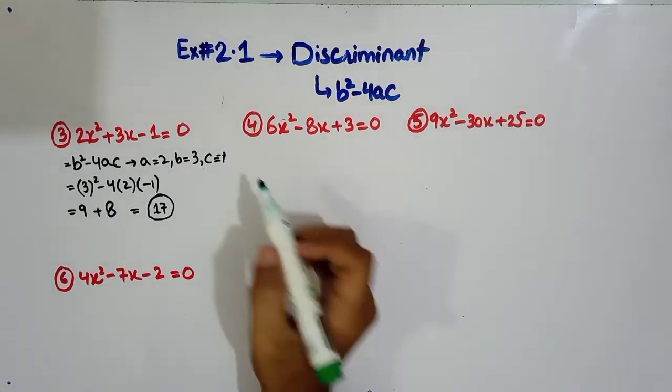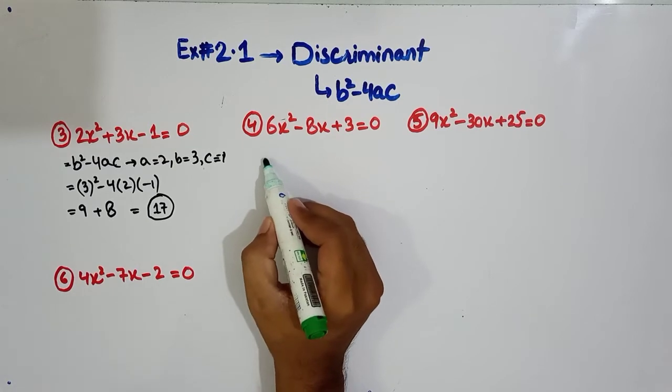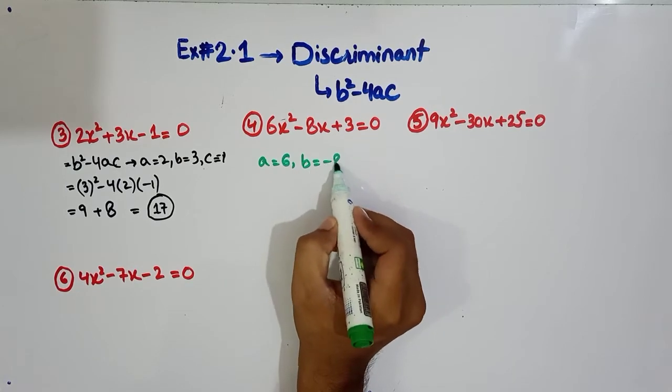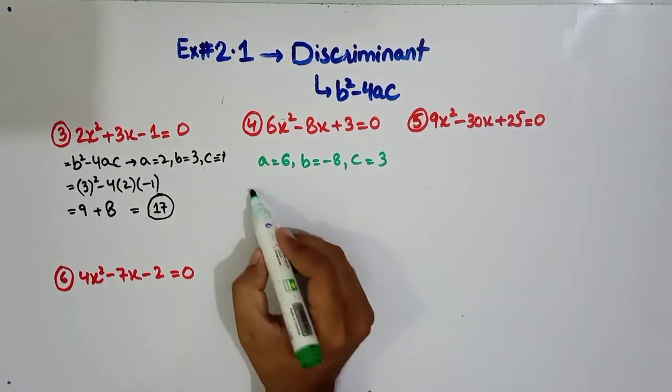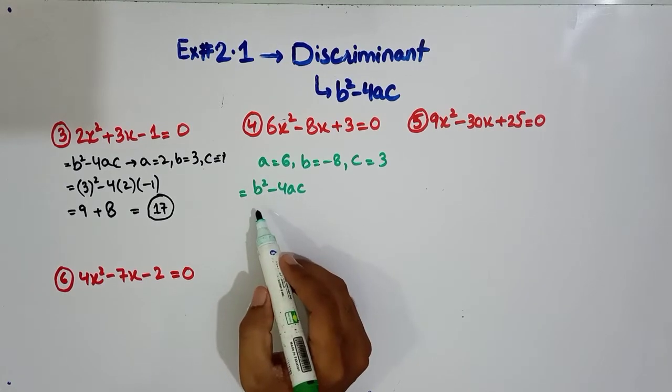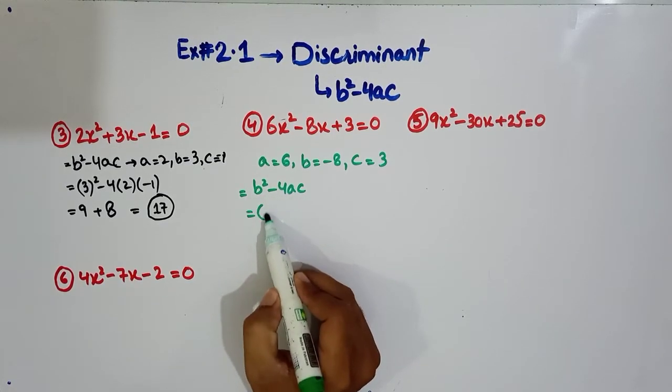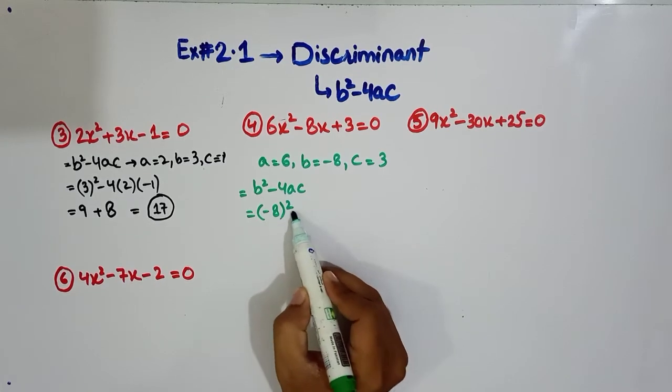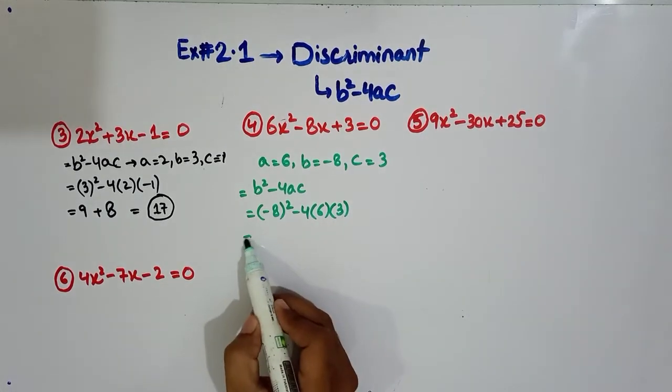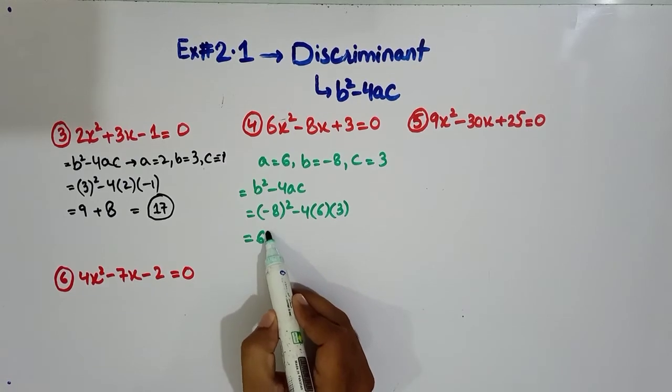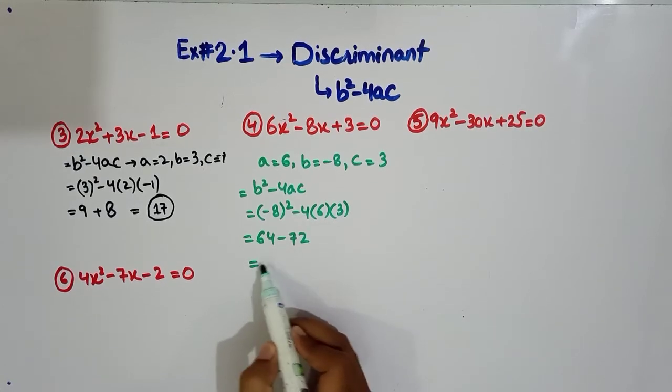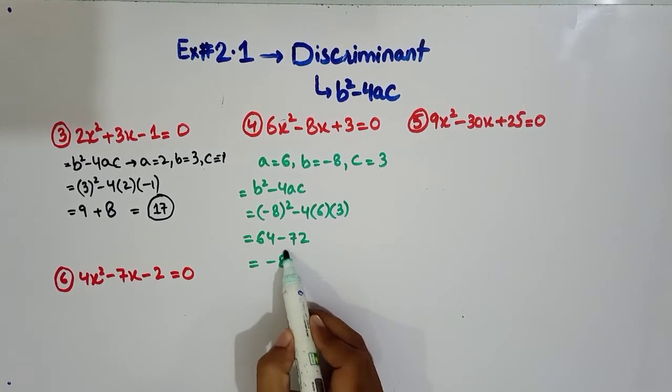Question number 4, we will write a, b, c values, then we will write discriminates. Now we will put values. Now we will get, you have 64, and if we multiply it, then it will be 72. The answer is negative 8.